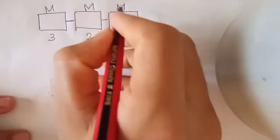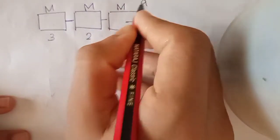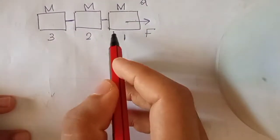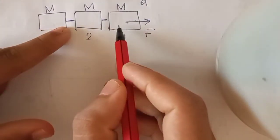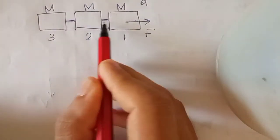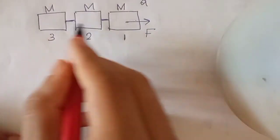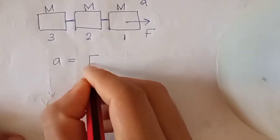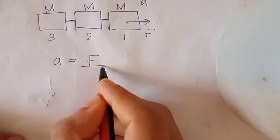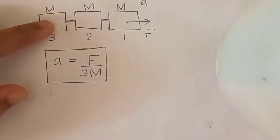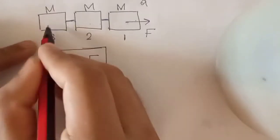There is a force applied in total. What is the resulting acceleration? Because the train is connected as one unit, all three compartments share the same acceleration. The acceleration value is the total force divided by total mass.